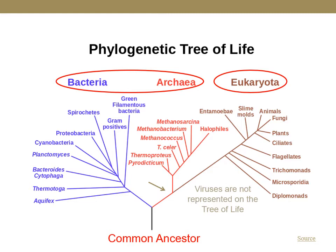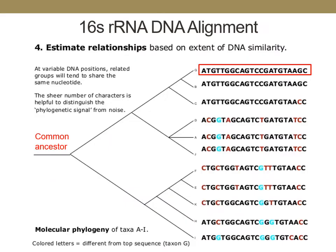Because we have the technology to sequence the genes of organisms, this version of the tree of life is grouped into three domains based on the genetic similarity of their 16S ribosomal RNA gene. When this ribosomal RNA gene is sequenced, organisms can be grouped based on how closely related they are genetically.